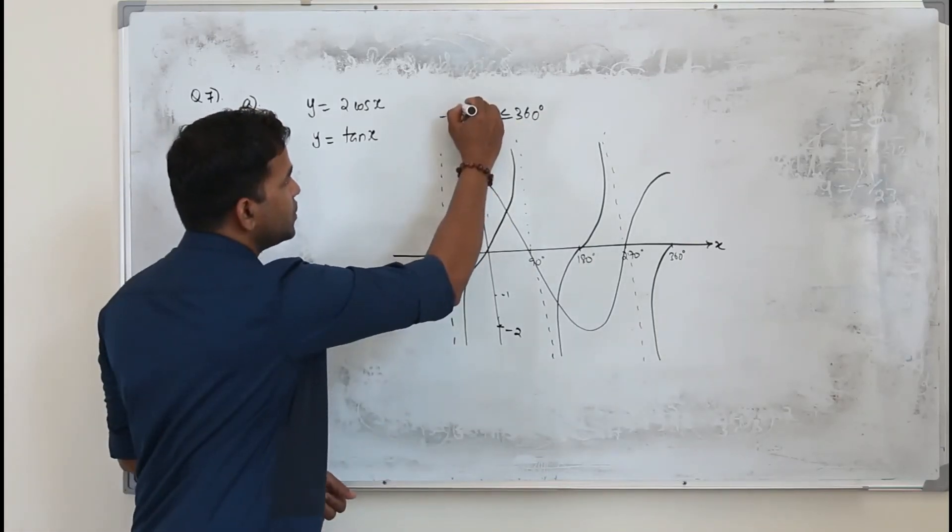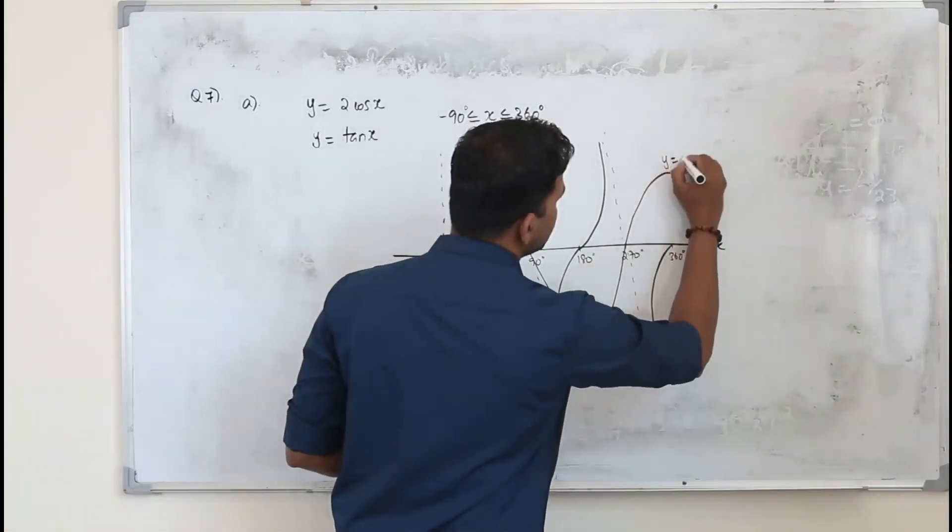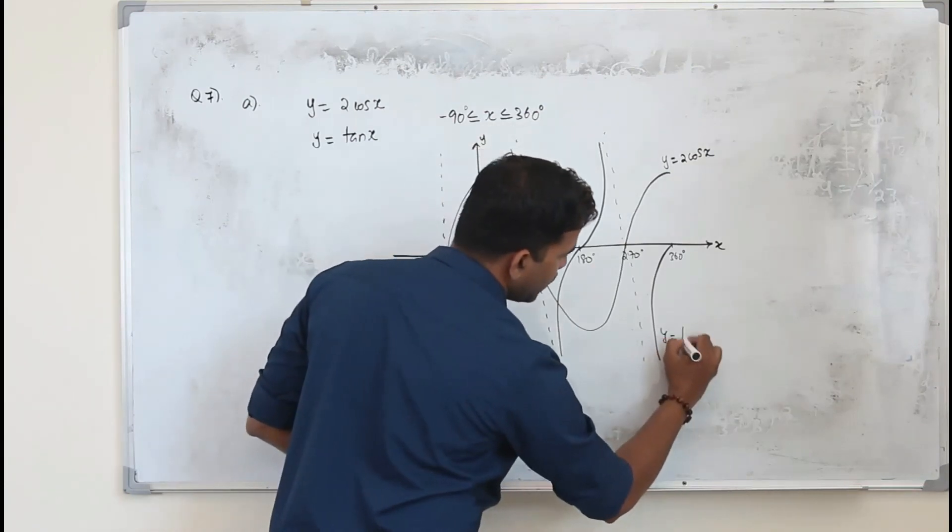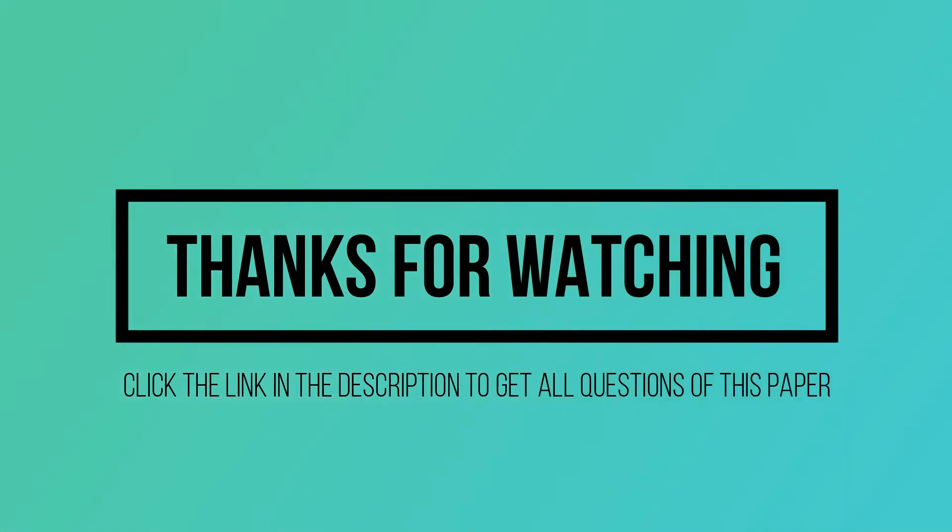You can label the graphs: y = 2cos(x) and y = tan(x).